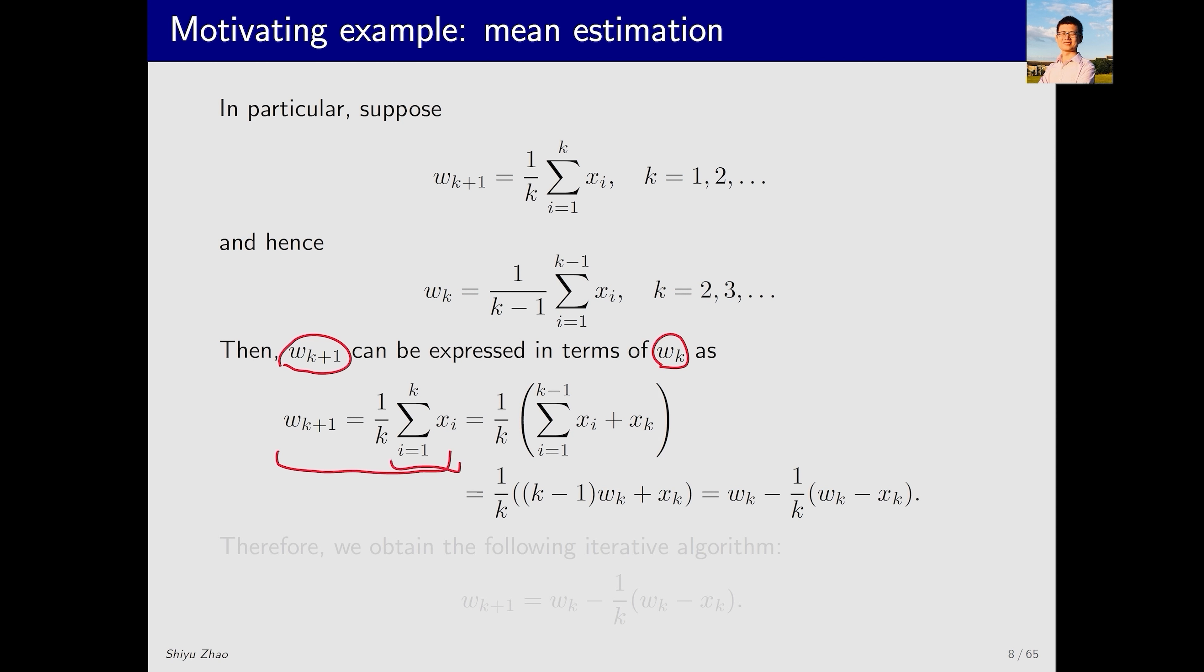w_{k+1} is defined as an average. This is the sum of the first k samples x_i. We can split this sum into two parts. The sum of the first k minus 1 samples and the kth x_i, which is x_k.